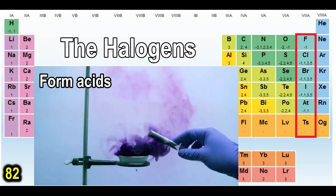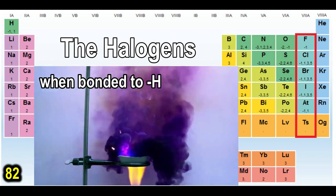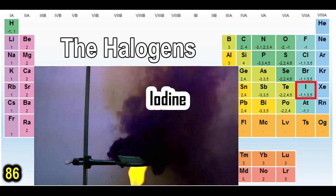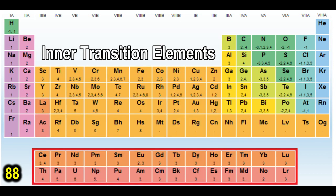Then in group 7, the halogens. All of them form acids when bonded to hydrogen. It comes from the Greek salt and maker. Like chlorine, tennessine, fluorine, iodine, astatine, bromine.